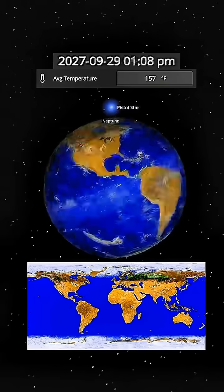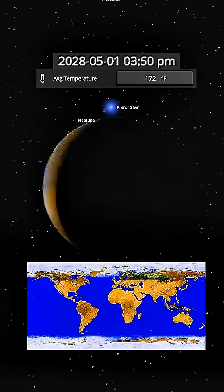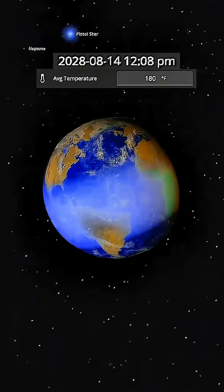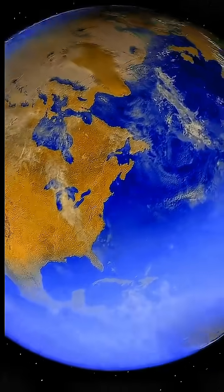The combined heat from both stars begins to cook our planet. The Pistol Star's radiation, even from this vast distance, adds to our sun's warmth, slowly raising Earth's temperature until it becomes too hot for life within years.